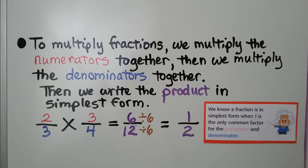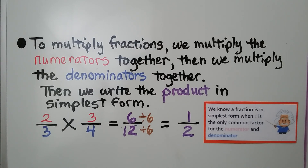Then we write the product in simplest form. We have 2 thirds times 3 fourths. We multiply 2 times 3, which is equal to 6. Then we multiply the denominators, 3 times 4, which is equal to 12. We find the greatest common factor for the numerator and denominator, and that would be 6. 6 divided by 6 is 1, and 12 divided by 6 is 2, so it's equal to 1 half. We know a fraction is in simplest form when 1 is the only common factor for the numerator and denominator.